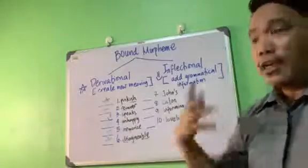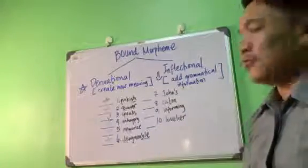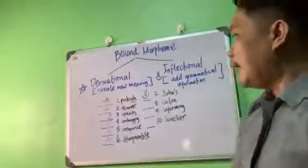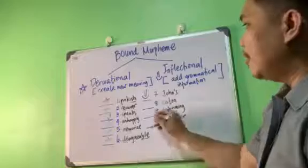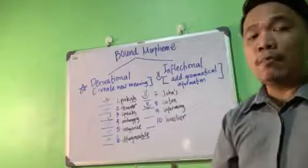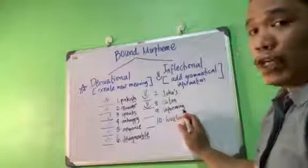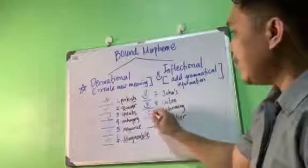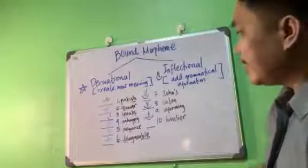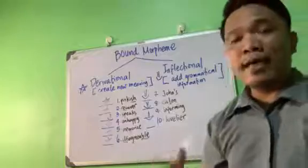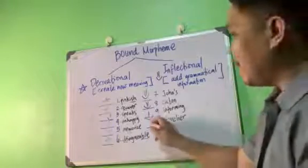How about 'John's' — 'John' with apostrophe -s? Does it change the meaning? No, it doesn't change the meaning; it shows possession. So therefore, this is a smiley. How about 'eaten'? Eat, ate, eaten — does it change the meaning? No, it does not change the meaning; it just changes the aspect. So therefore, this is a smiley. How about 'inform' to 'informing'? It does not change the meaning, but it shows a grammatical aspect — from 'inform' to 'informing.' So therefore, this is a smiley. How about 'lovelier'? From 'love' to 'lovelier' — this is an example of inflectional, because there is what we call the comparative, which is just a grammatical form. So this is a smiley.